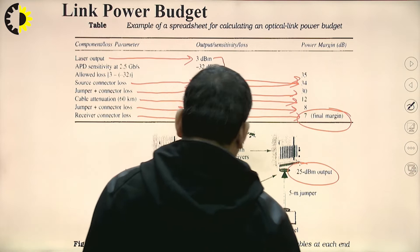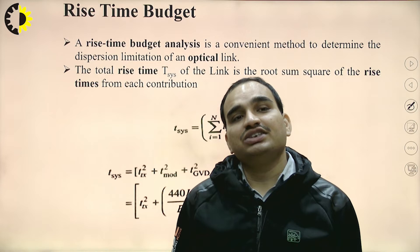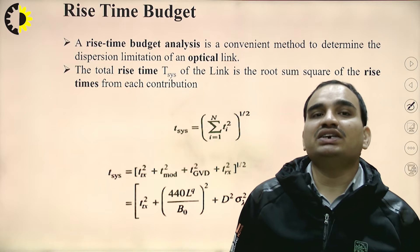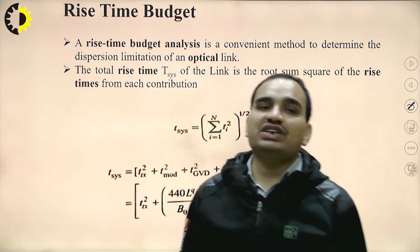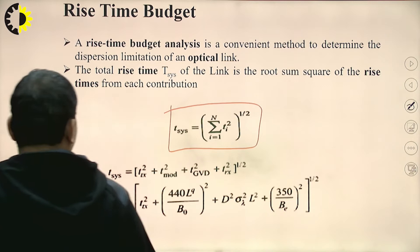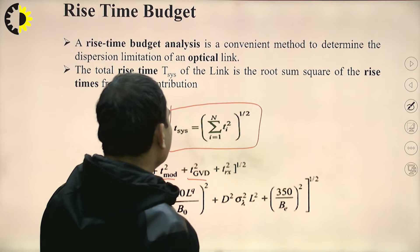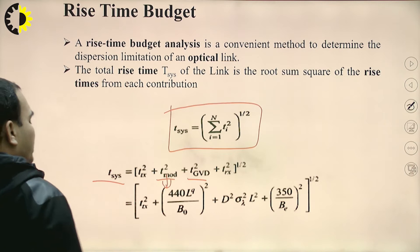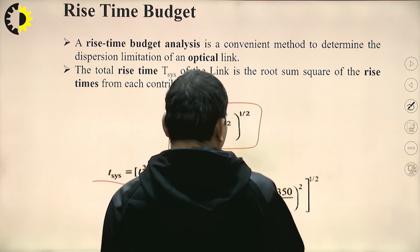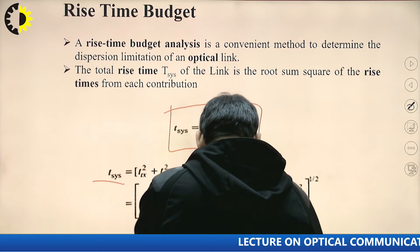Rise time budget analysis is a convenient method to determine the dispersion limit of an optical link. The total system rise time t_system is the root-sum-square of the rise times of each contribution: t_system = (Σ tᵢ²)^(1/2). It includes the transmitter rise time, modulation time (440·L^q / B₀), GVD term (B₀²·D²·σ²·L), and receiver rise time (350/Bₑ), combined under a square root.